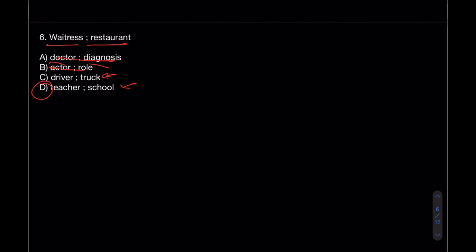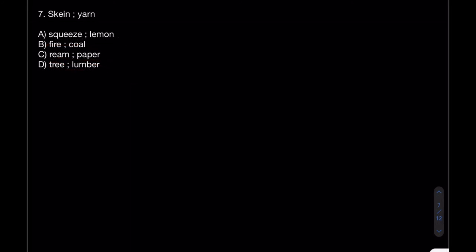The exam tests your ability to use common sense and logic. You can improve this through practice — you start to understand what the test wants and the format becomes easier. For number seven we have skein and yarn.